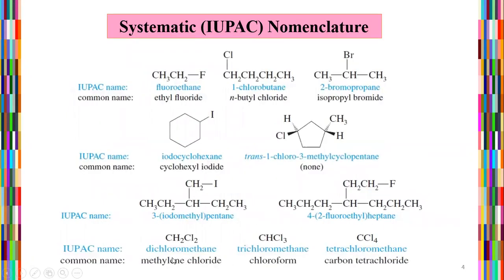According to their systematic IUPAC nomenclature, compounds have both IUPAC names and common names. Some have linear structures, branched structures, and also cyclic structures.